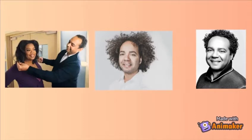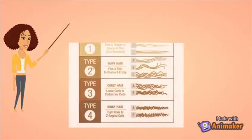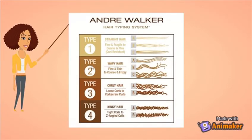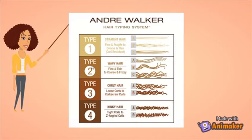While Andre Walker gives us a broad understanding of the different hair types, I'm here to break it down for you. There are four hair types, and those hair types are then broken down further into subcategories. Let's start with Type 1 hair. Type 1 hair is straight hair, but we're not going to spend too much time on it because this is a curly hair channel.